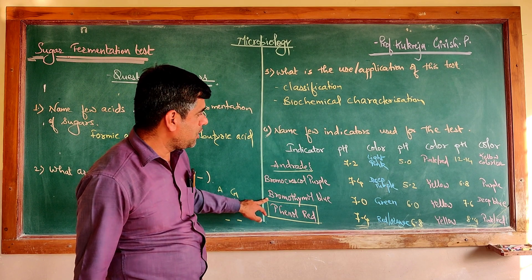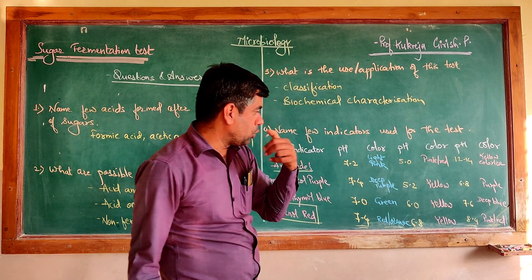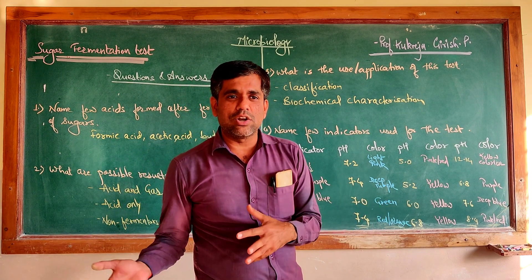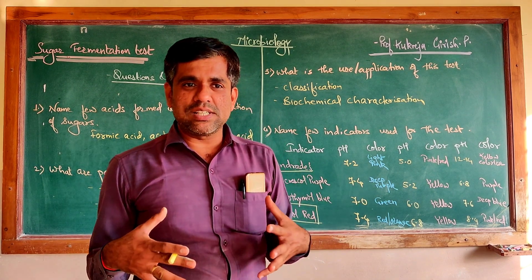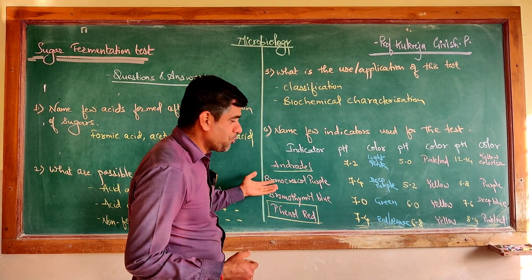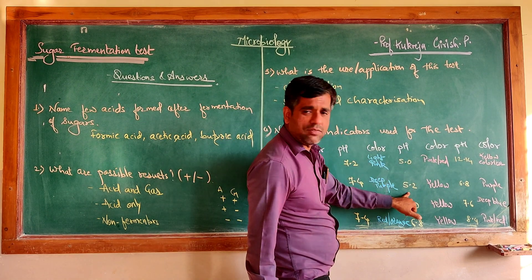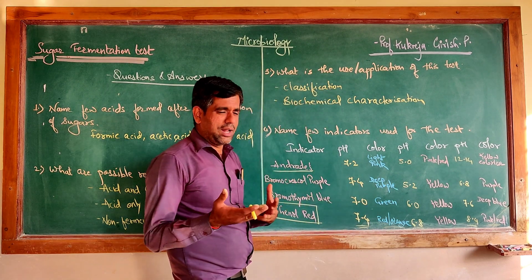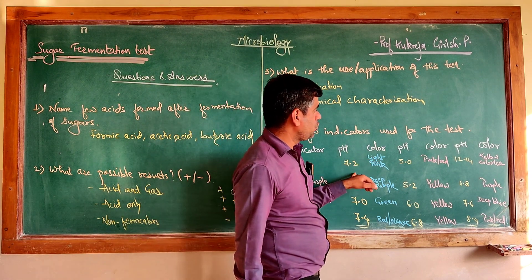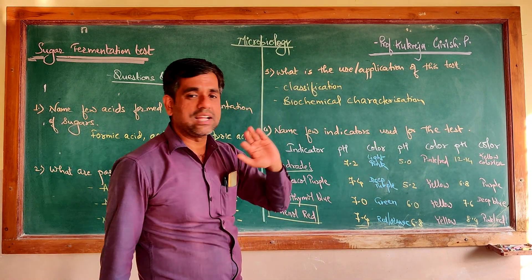If you are using bromothymol blue, it will be green at neutral pH, yellow at acidic pH, and deep blue at alkaline pH. Sometimes if acids are not formed and peptone or tryptone components are being degraded, alkaline products are formed. Bromocresol purple is deep purple at pH 7.4, turns yellow with acid formation, and returns to purple with alkaline products. Reds shows light pink at neutral pH, pinkish red at pH 5, and yellow to colorless in the alkaline pH range.